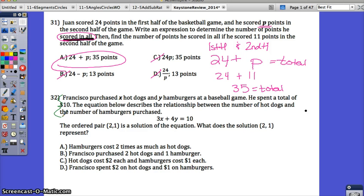Let's label what each thing represents. Francisco purchased X hot dogs, so X is the number of hot dogs. And Y hamburgers, so Y is hamburgers. He spent a total of $10, so this is the total cost.